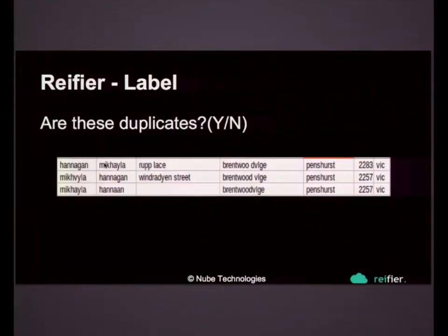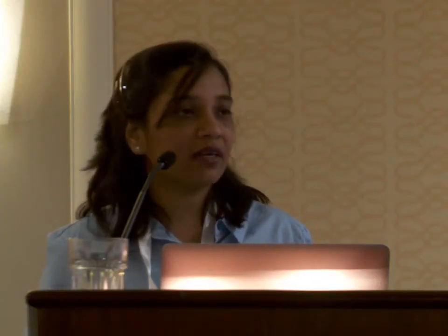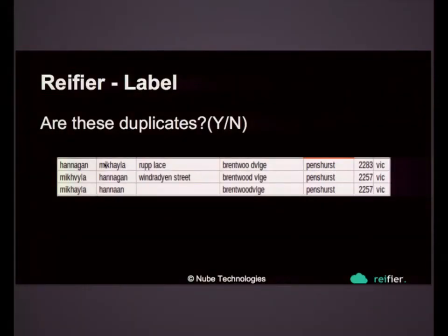How does a typical workflow look? We have a very simple set of steps. We take labeled data from the user — every user has a notion of similarity, what records are the same or not same according to them, according to their business case. We ask them to label this data. As you can see, there are typographical errors, each field has variations, some fields are probably the same, some are missing, and the user is best placed to say whether they would label this data as same or not.